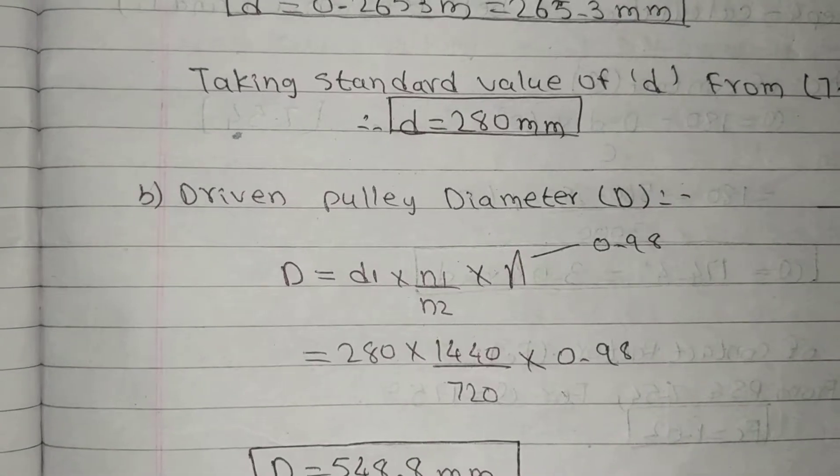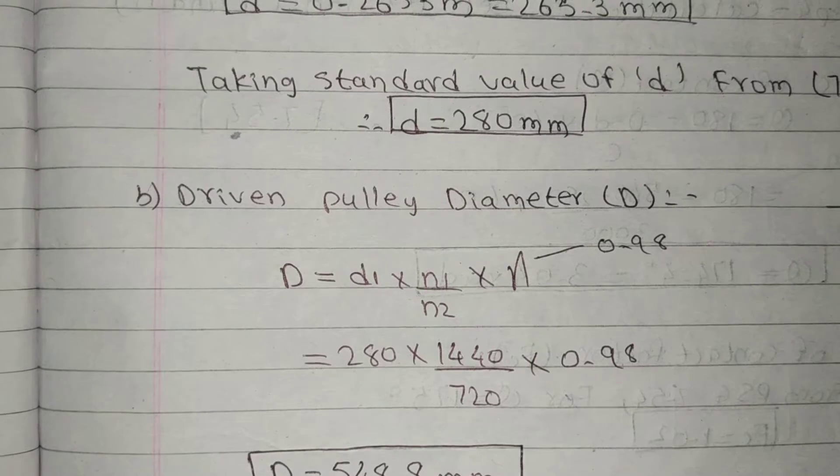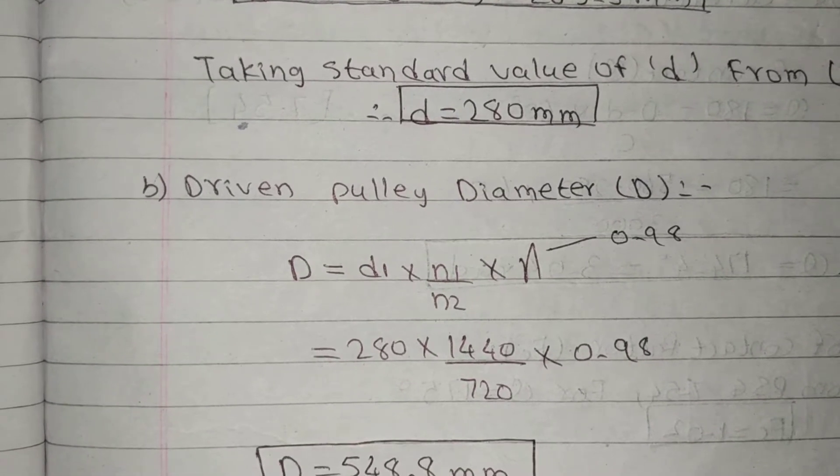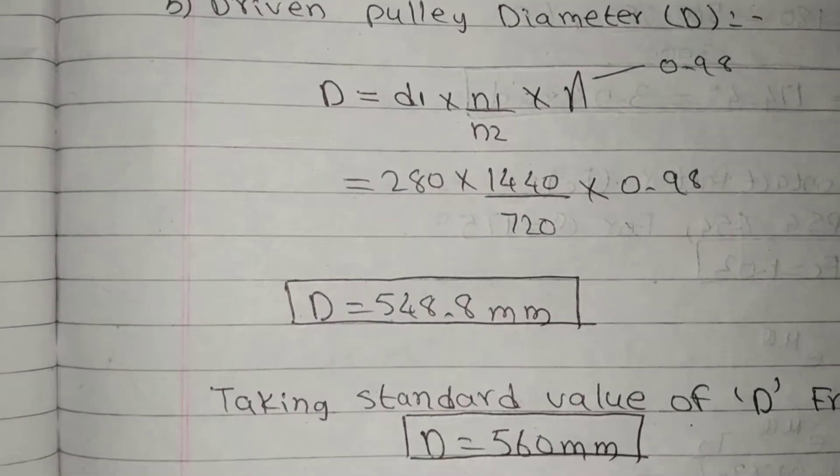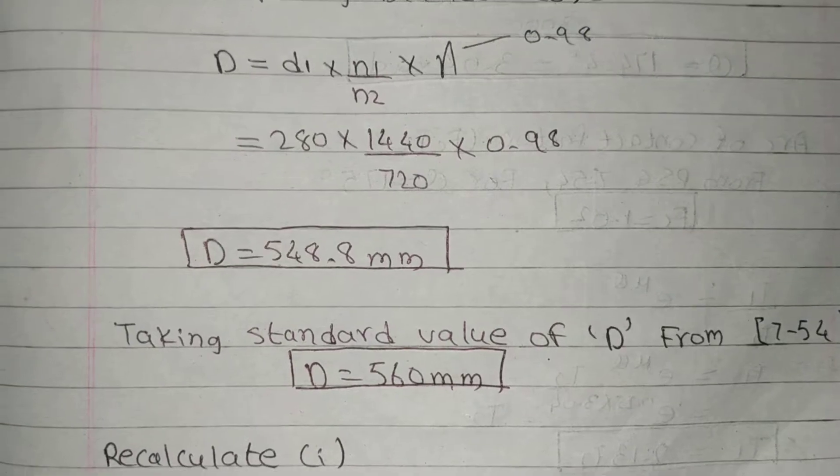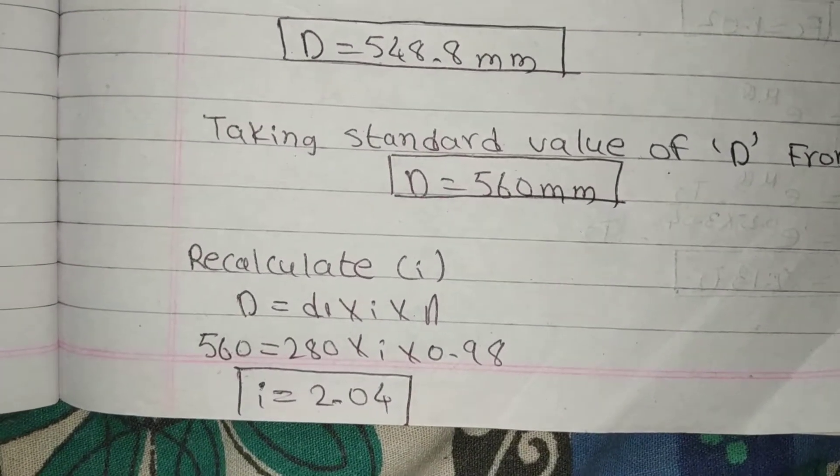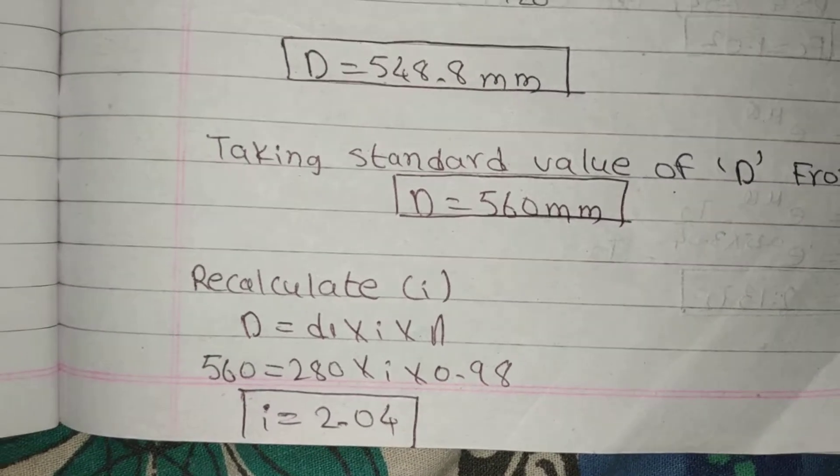Capital D formula is D1, N1 upon N2 into efficiency. This is D, the value of D from PSG 7.54. Calculate I. Capital D is equal to D1 into I into efficiency.